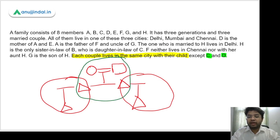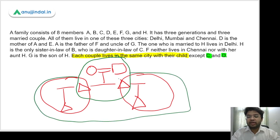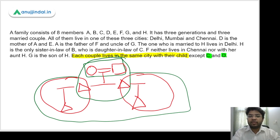That would defeat the purpose of the question, since three cities are involved. That means C and D must be the grandparents. If the grandparents do not live with their child, then the three-city arrangement is possible. So we can say C and D are the grandparents.